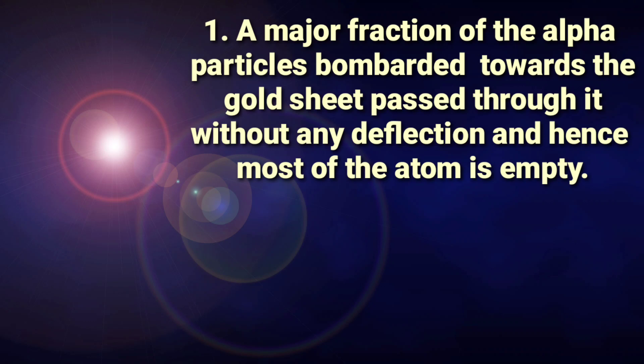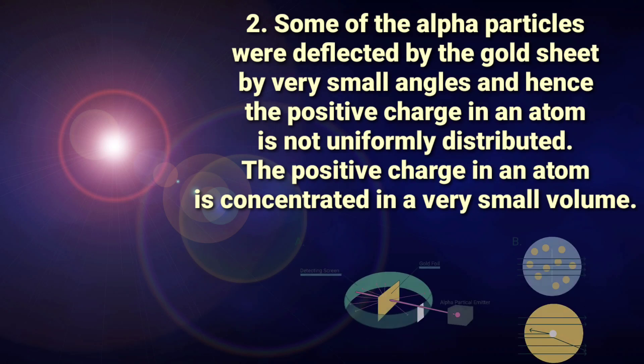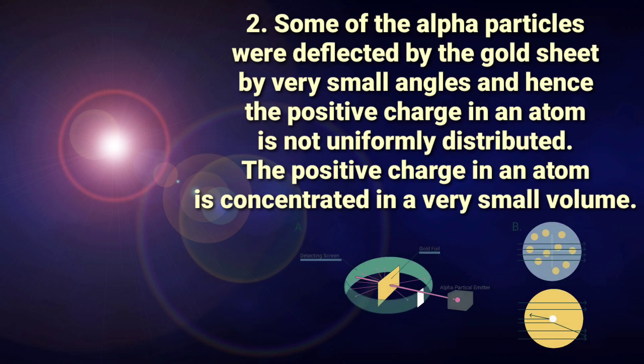Number two, some of the alpha particles were deflected by the gold sheet by very small angles and hence the positive charge in an atom is not uniformly distributed. The positive charge in an atom is concentrated in a very small volume.